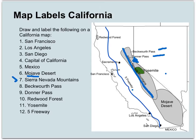The redwood forest is the next one you need to know. It's located up on the coast in northern California, almost to Oregon. There are a lot of big redwood trees up there that are absolutely beautiful if you ever have a chance to visit. And then we have Yosemite, which is shown in this green little bubble right there in the Sierra Nevada mountains.